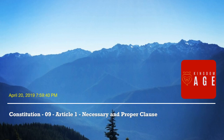At first glance — and keep in mind that first glances are not always last glances — a close analysis of the words of the necessary and proper clause suggests three criteria for a federal law to be within its scope. Laws enacted pursuant to the clause must be: (a) necessary, (b) proper, and (c) for carrying into execution some other federal power. Historically, most of the controversy surrounding the meaning of the necessary and proper clause has centered on the word necessary.